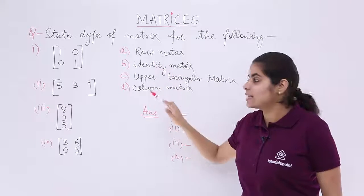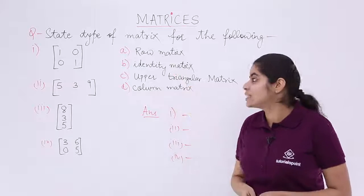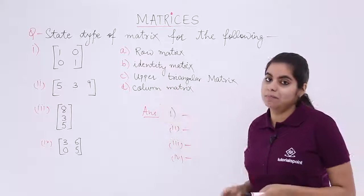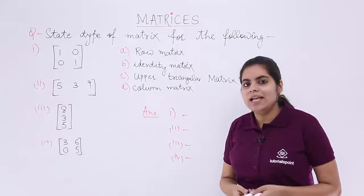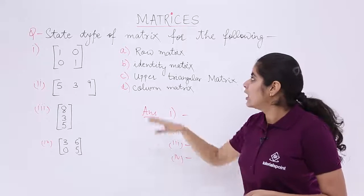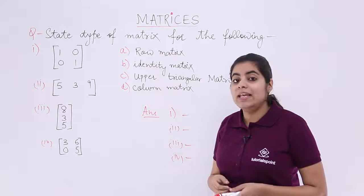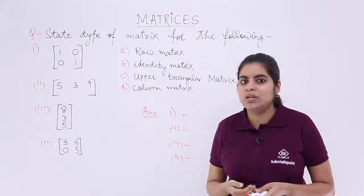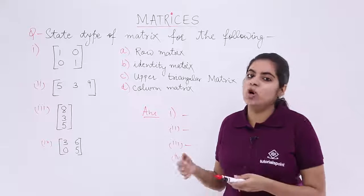Those options are row matrix, identity matrix, upper triangular matrix and column matrix. Now, let's see the option number one, row matrix. And now let's see the questions or the other way round can be first you see the questions and then choose which option of these is correct. Let's see the first part.